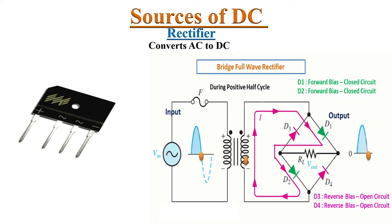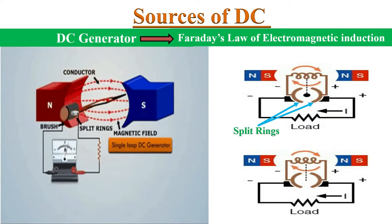We will discuss rectifier in other video. A DC generator which converts mechanical energy into electrical energy. When conductor slashes magnetic flux, an EMF will be generated based on Faraday's law of electromagnetic induction. Generators equipped with commutators or split rings can produce direct current.